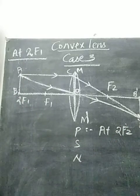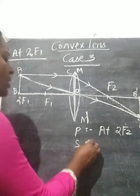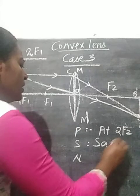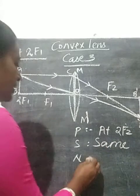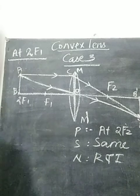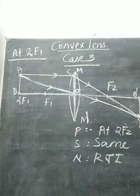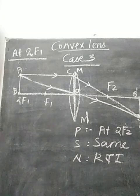Position of object is at 2F1. Position of the image is at 2F2. Size is same as that of the object. Nature is real and inverted. These are the characteristics of the image formed by a convex lens when an object is placed at 2F1.